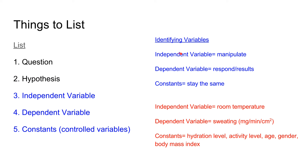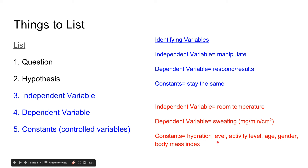Following our example: if there's a connection between room temperature and sweating, because the body perspires to lower body temperature, then increasing room temperature will result in an increase in sweating. When listing variables, the independent variable is room temperature, the dependent variable is sweating measured in specific units, and the constants include things like hydration level, activity level, age, gender, and body mass index.